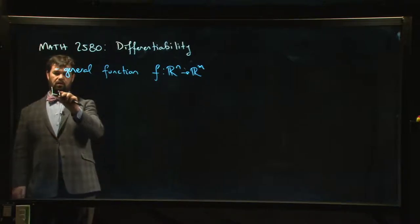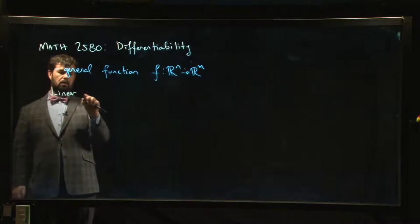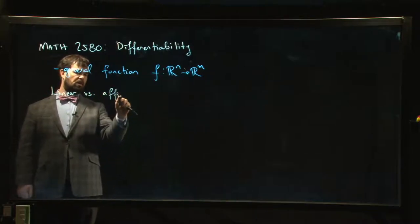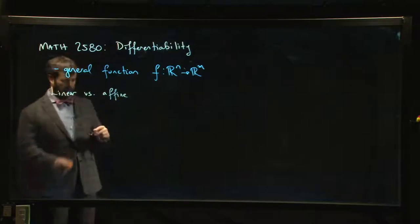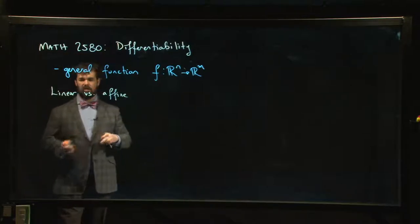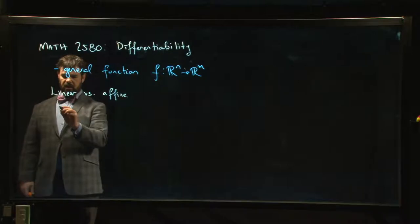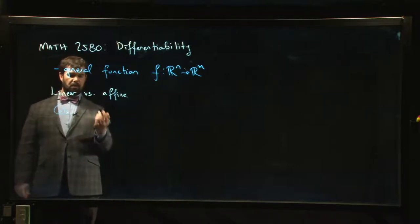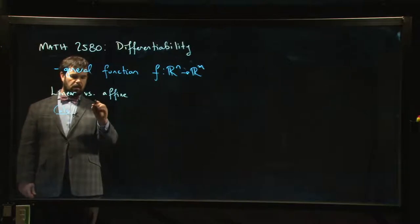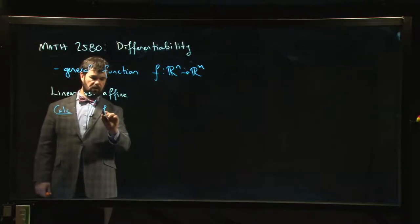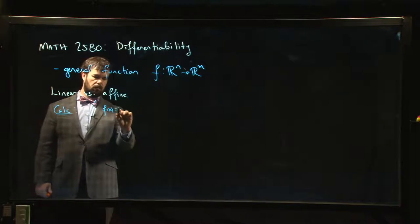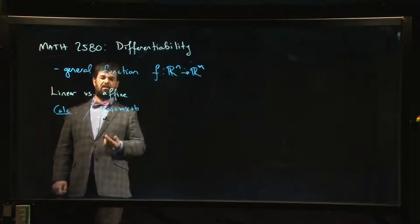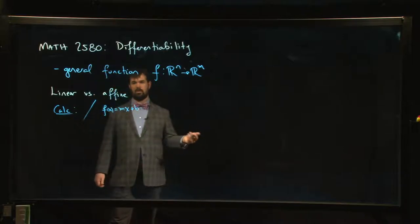One terminology issue I want to bring out is that in calculus, when we talk about a function being linear, we think about something whose graph is a line.